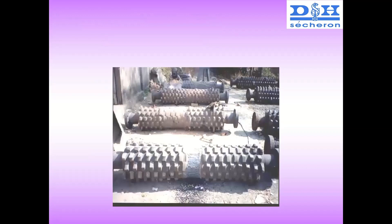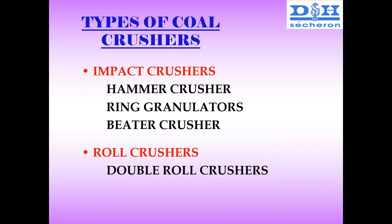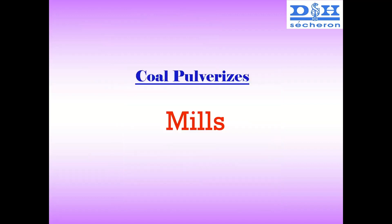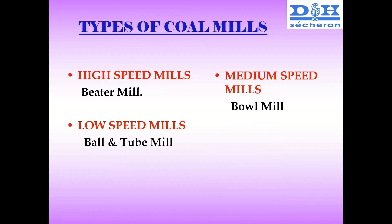This is a pictorial view. Now let us come to coal mills. There are normally three types of coal mills, but in today's context, medium-speed mills have been stabilized, and most power plants are going for medium-speed mills — that is, ball mills.